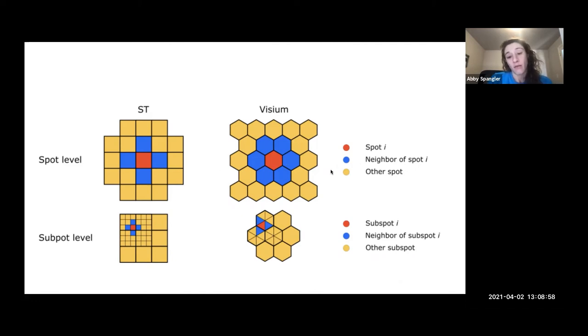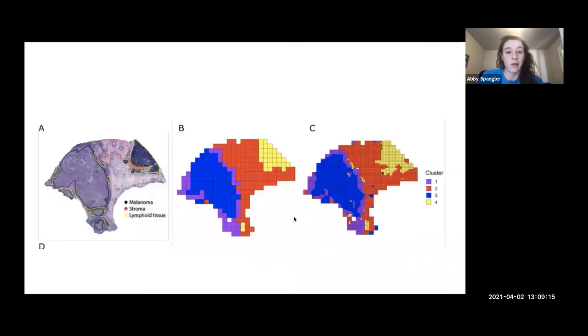They do an initial round of that kind of clustering, and then they divide the spots into sub-spots and continue to keep in account the neighboring spots of the spot you're interested in. So what you end up with is a higher resolution image of the clustering.